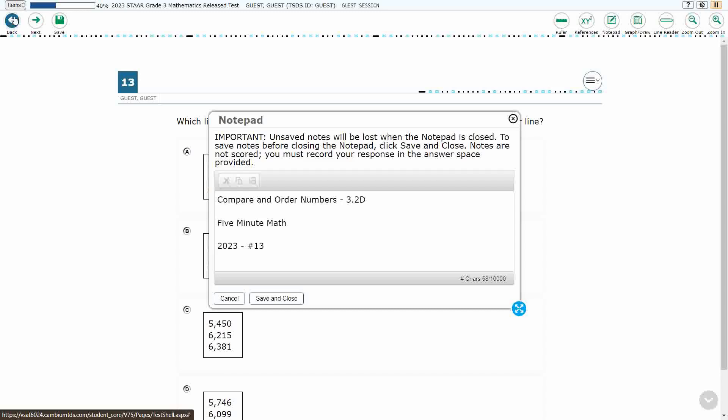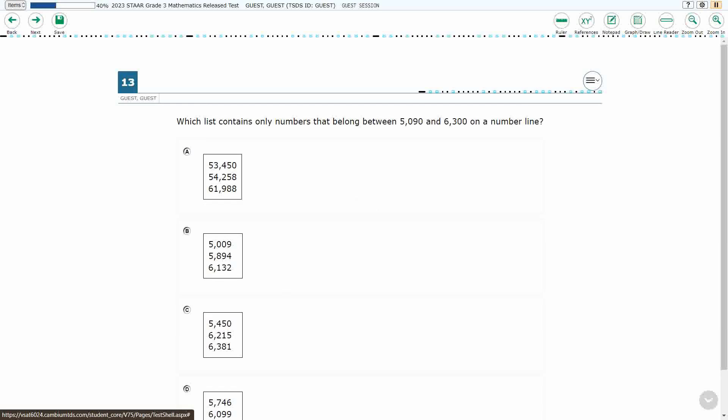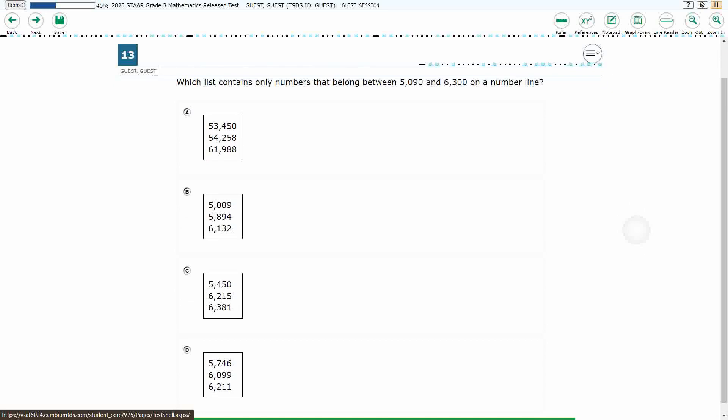Hello, and welcome to 5-Minute Math. Today we are looking at the third grade concept of compare and order numbers. This is standard 3.2D in the great state of Texas, and we are using item number 13 of the 2023 released STAR test. If you haven't done so already, please go ahead and take a moment to pause the video, work this problem out on your own, unpause it, and we will look at our answers together.